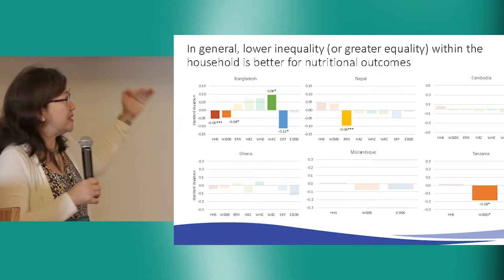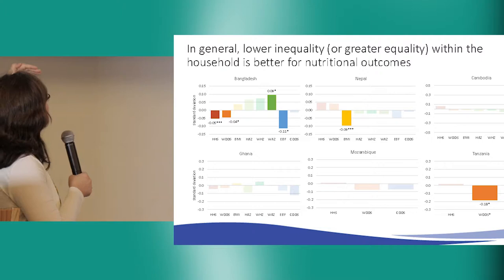For outcomes like hunger, dietary diversity, BMI, and others, you want the scores below the line, meaning that decreasing intra-household inequality improves nutrition. The only exception appears to be weight-for-age in Bangladesh, which is a very strange finding that we're trying to unpack further.